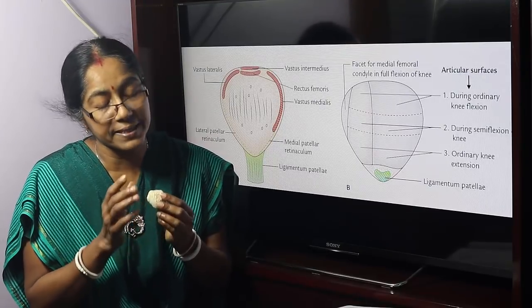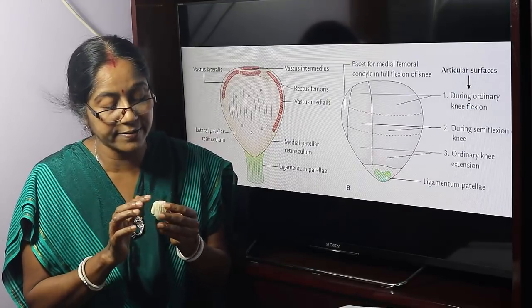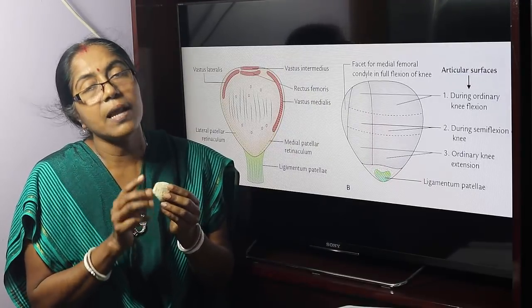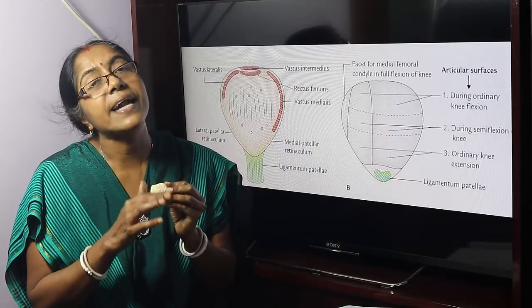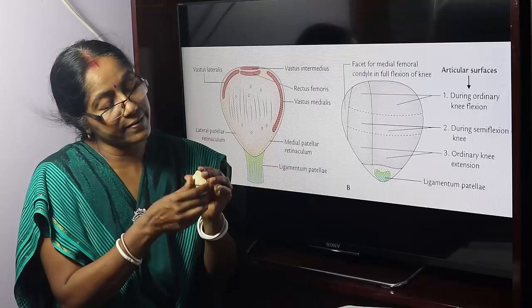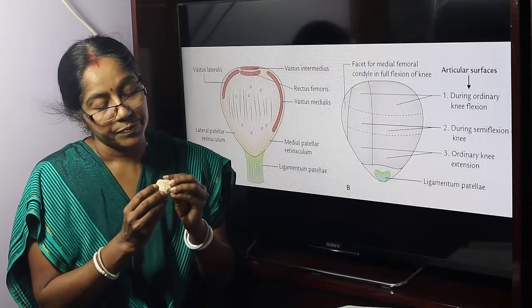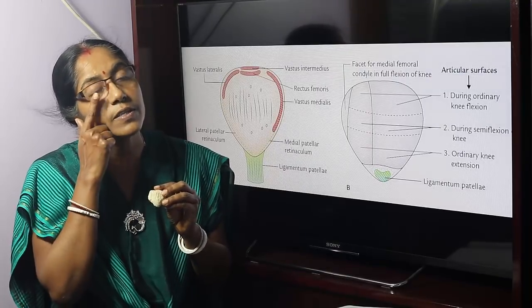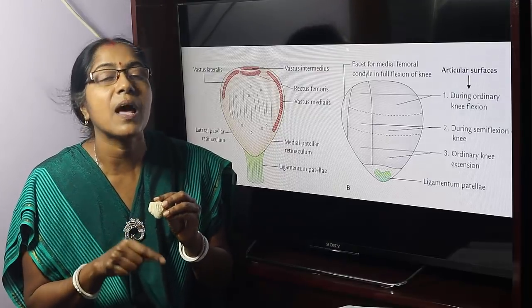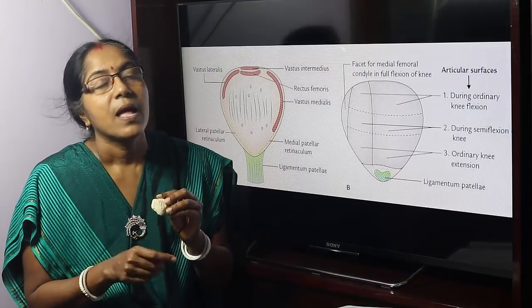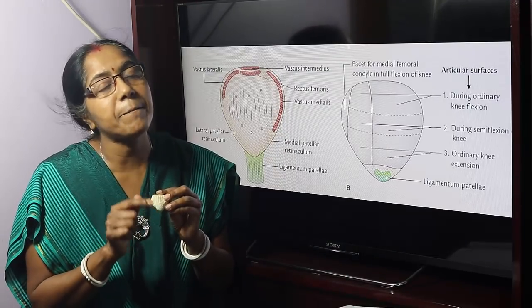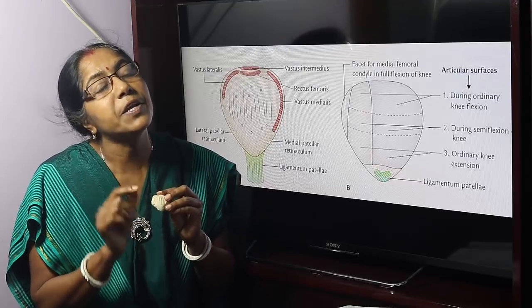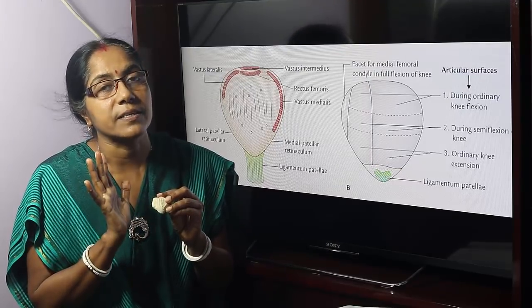The apex provides attachment to the ligamentum patellae. The ligamentum patellae connects the patella with the tibial tuberosity. The anterior surface is directed downwards and also provides attachment to the ligamentum patellae.